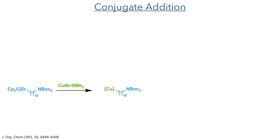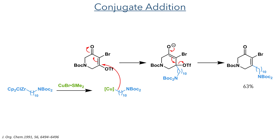The synthesis of fragment 2 began with a conjugate addition to an enone. An organozirconium reagent first undergoes transmetallation with copper bromide DMS. This organocuprate is a very soft nucleophile and selectively adds to the beta carbon of the enone, forming an enolate intermediate that then eliminates triflate, forming the desired alkylated bromo enone in a 63% yield.